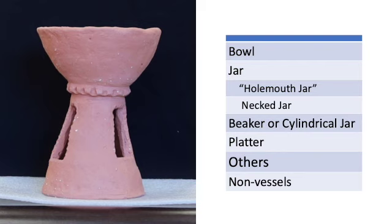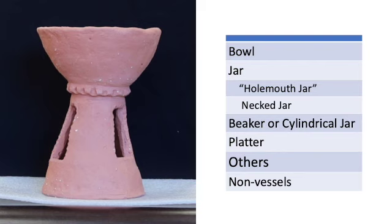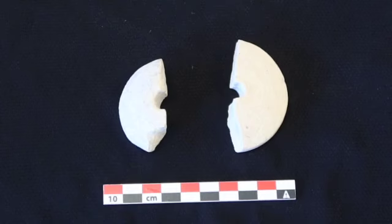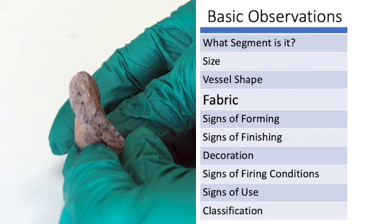Then there are more unusual vessel shapes, like lamps and stands. Finally, there are ceramic artifacts that are not vessels at all, such as roof tiles, figurines, and spindle whorls.